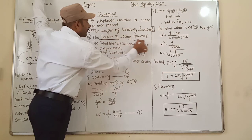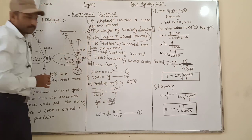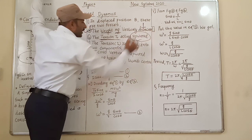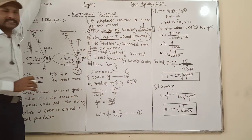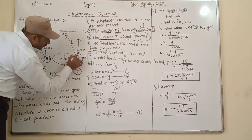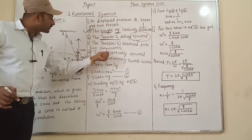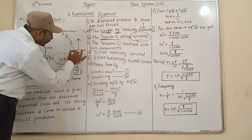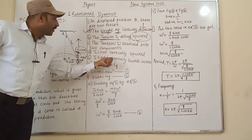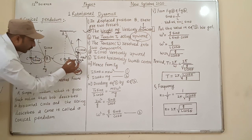This tension T₀ is resolved into two components. The first component is T₀cosθ acting vertically upward, and the second is T₀sinθ acting horizontally toward the center. T₀sinθ is the horizontal component and T₀cosθ is the vertical component.